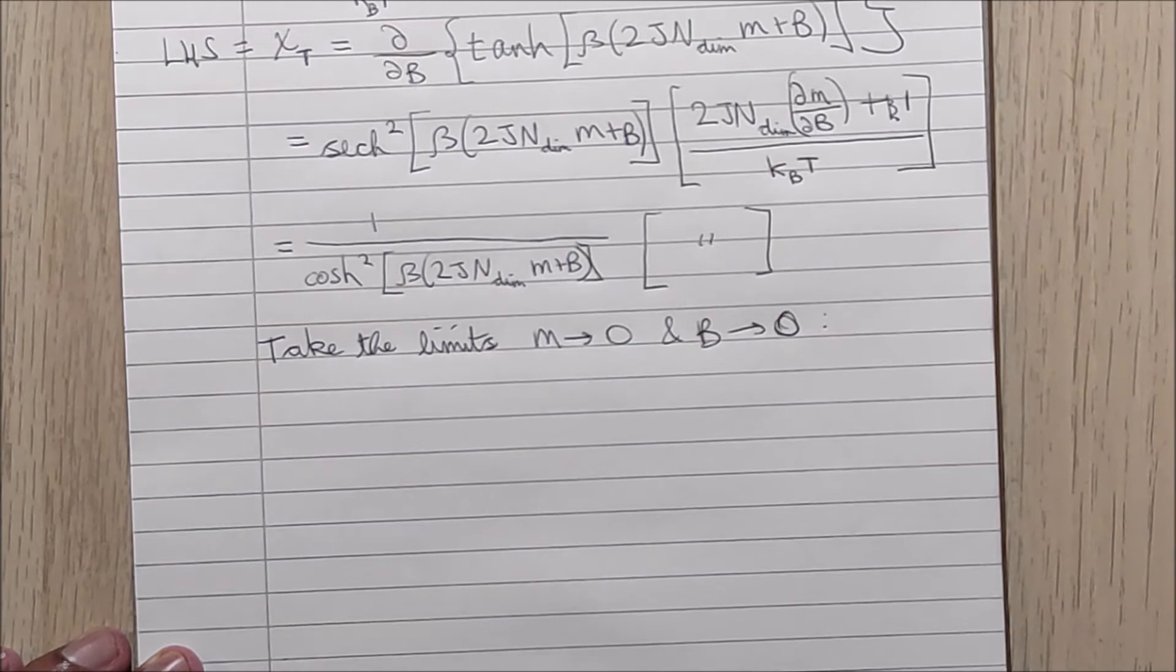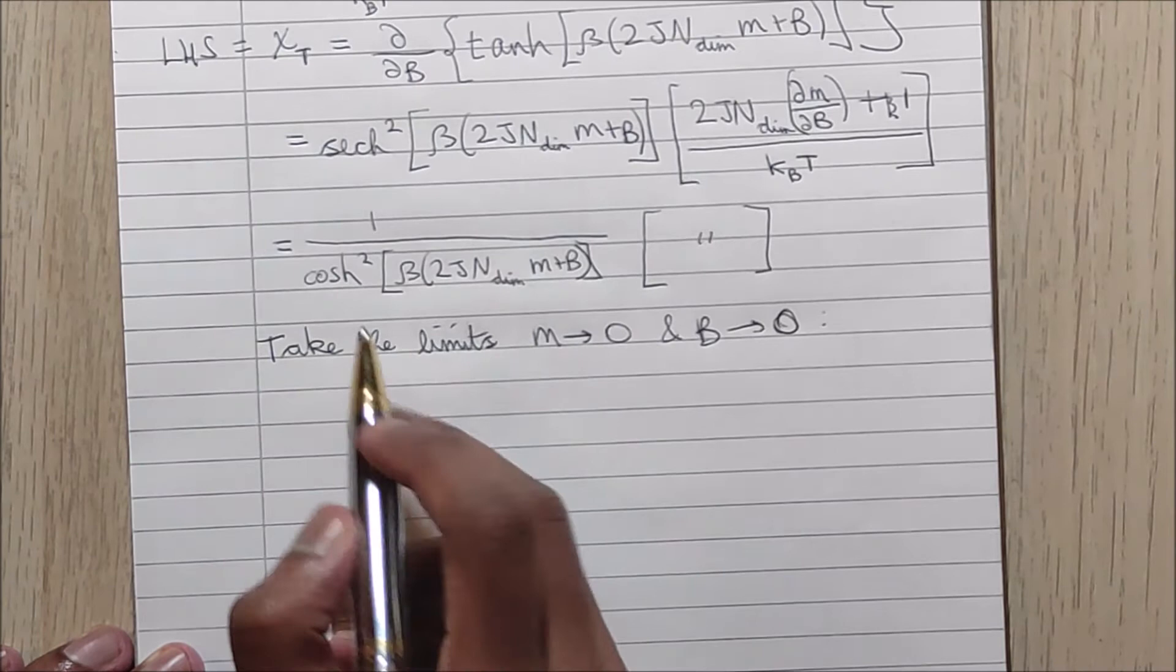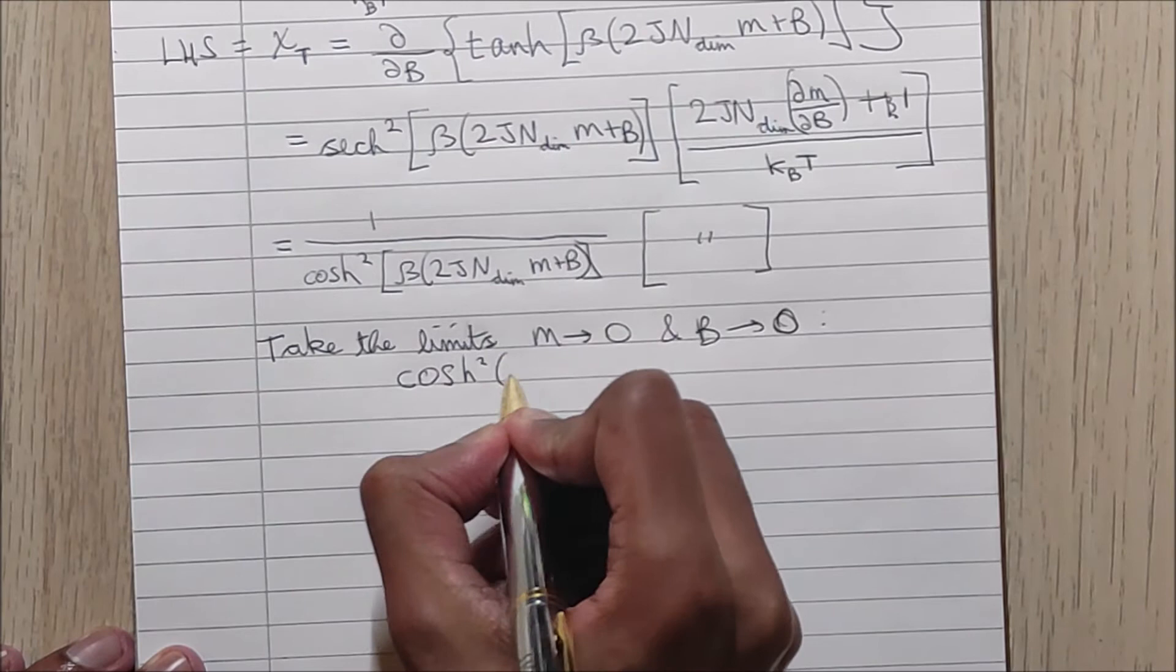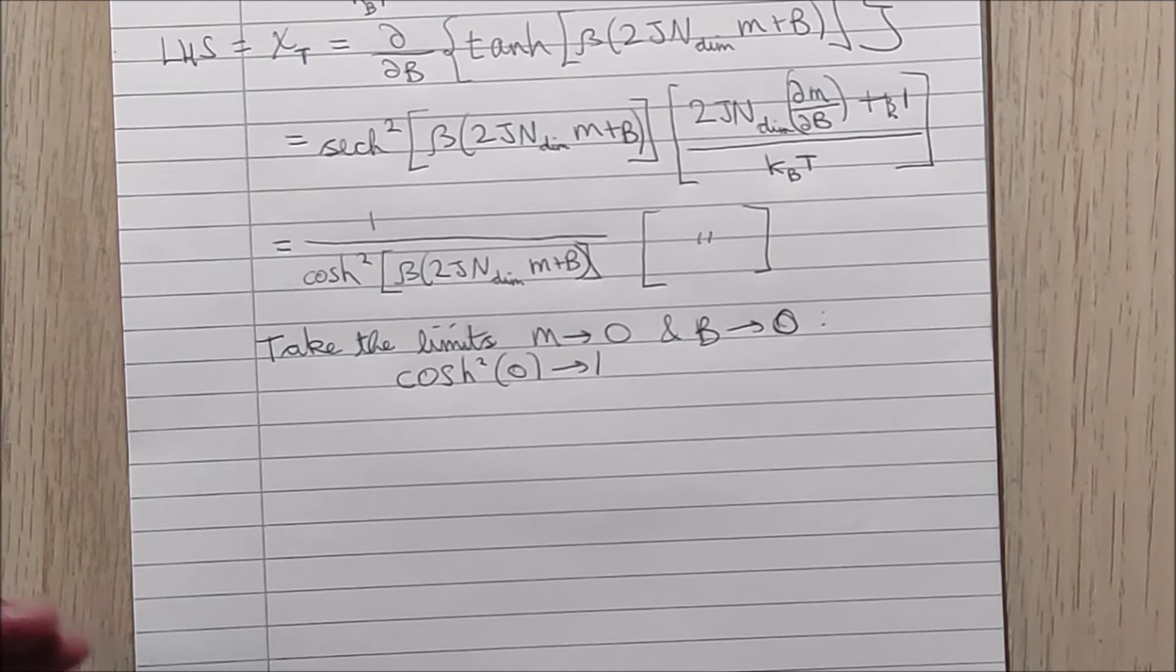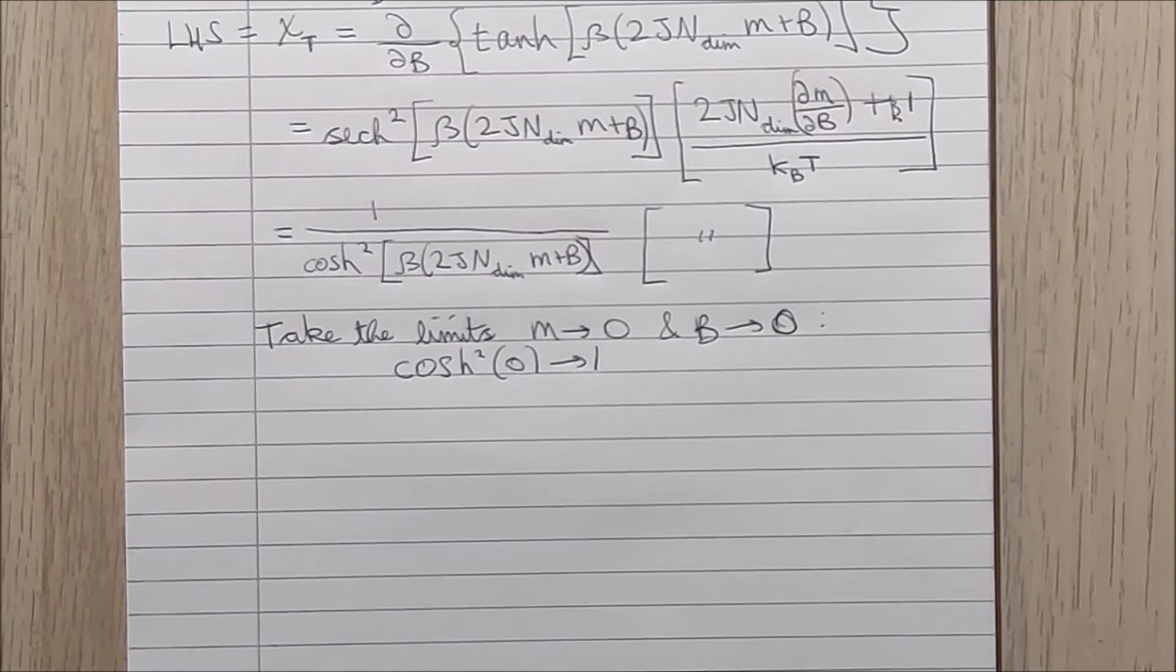So as we take the limits as M goes to zero and B goes to zero, you might notice that this argument all goes to zero, and we know that the hyperbolic cosine of zero is one.